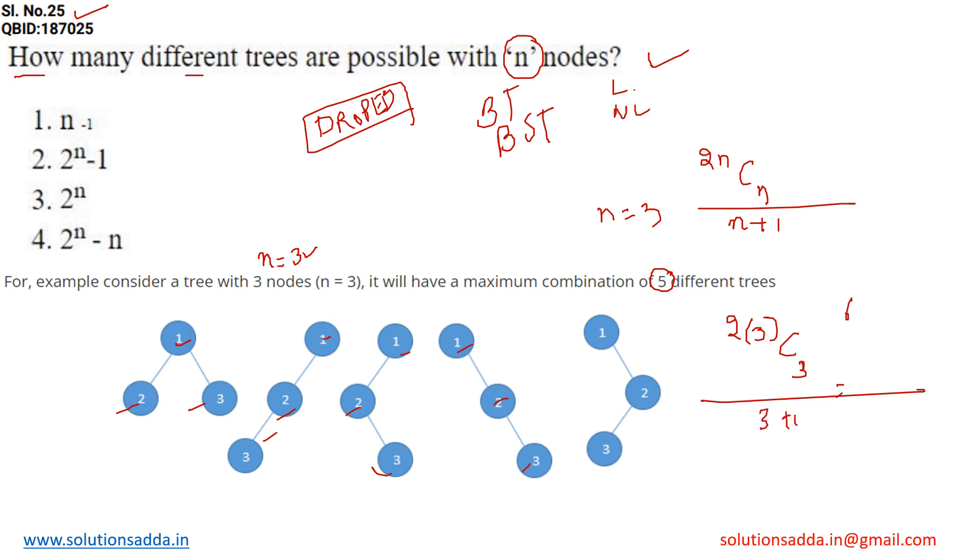It equals 6C3 divide by 4, that equals 6 into 5 into 4 into factorial of 3 divide by 3 factorial and 3 into 2 into 1 and 4. Now 3 factorial cut by 3, 3 to the 6, 2 with the 2 and 4 with 4. Here we get 5 is the answer.